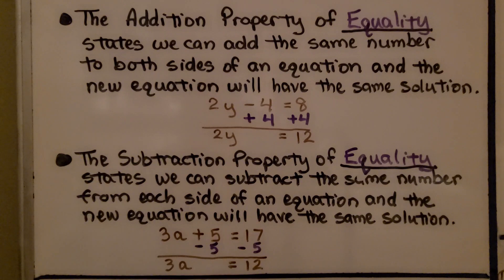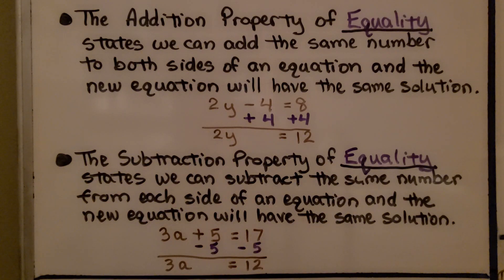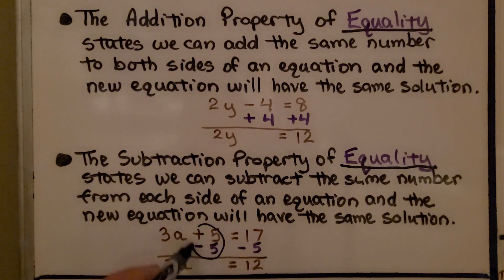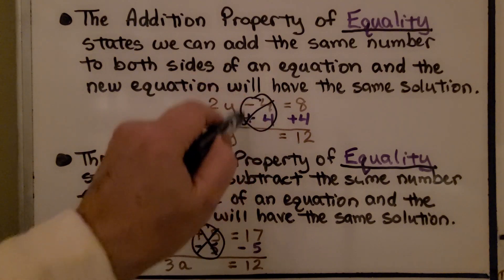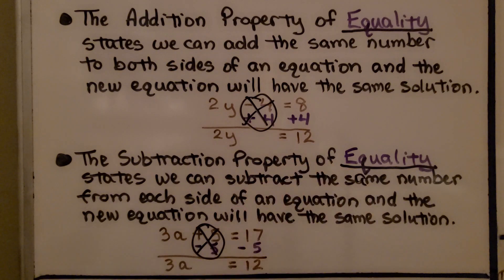The subtraction property of equality states that we can subtract the same number from each side of an equation, and the new equation will have the same solution. So if we have a plus 5, we can subtract 5 from each side — these create zero pairs and they get eliminated. So those are the properties of equality.